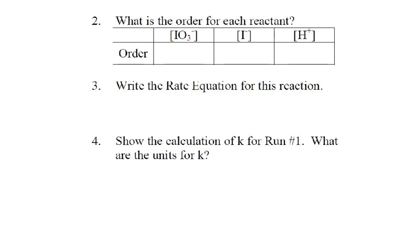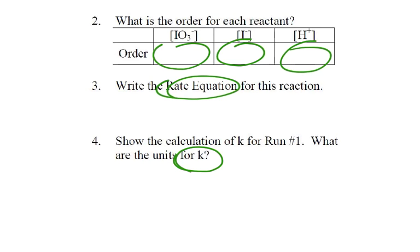Then after that, once we figure the orders, then we can write the rate equation, and then we can go back and solve for k. So these are standard things for us to do: figure out the orders, write the rate equation, and then get a value for k.